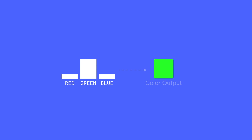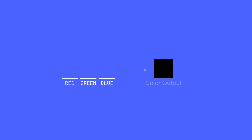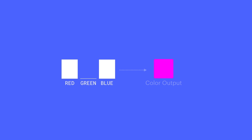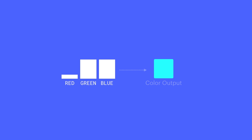Set all values to zero, we get black. Ramp up the red, we get red. And if we add blue, we approach magenta. Add in some green, now we have full white. You can play with the red and the green and the blue to get virtually any color you can think of.